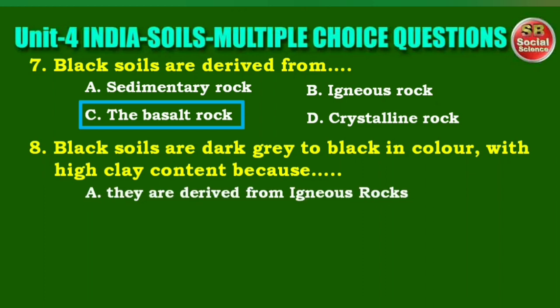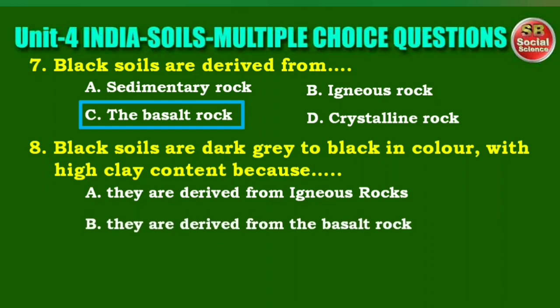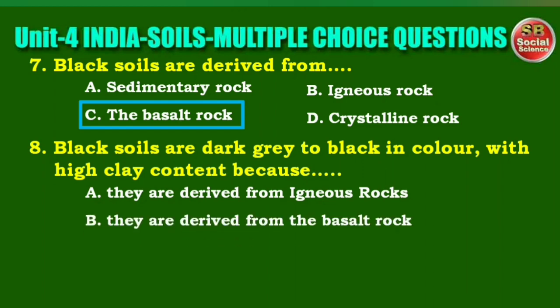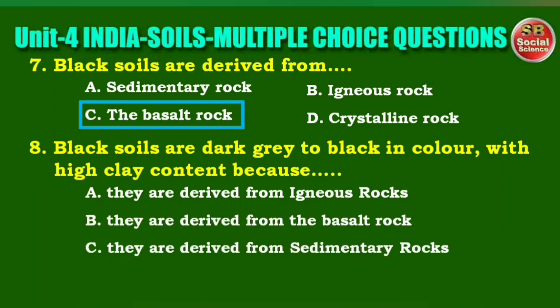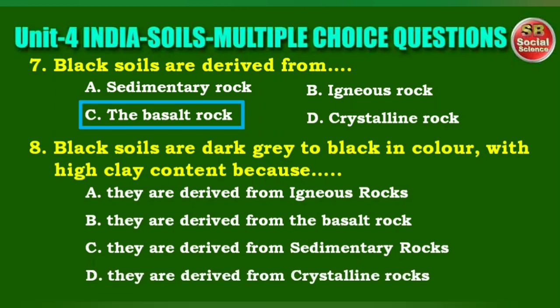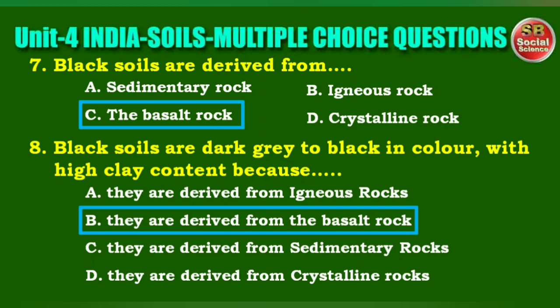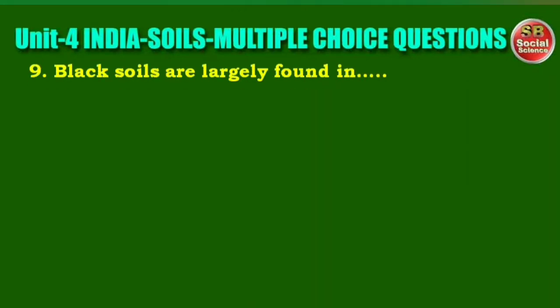Next question: black soils are dark gray to black in color with high clay content. Next question: black soils are largely found in. Options are: the Chota Nagpur range, the Deccan Basalt Trap region, the Aravalli range, the Satpura range. The right answer is option B, the Deccan Basalt Trap region.